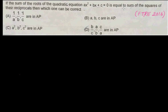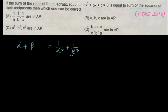Now the condition given in this problem is that the sum of the roots equals the sum of the squares of the reciprocals. That means α + β = 1/α² + 1/β². We already know α + β = −b/a, but we need to convert 1/α² + 1/β² into known values.